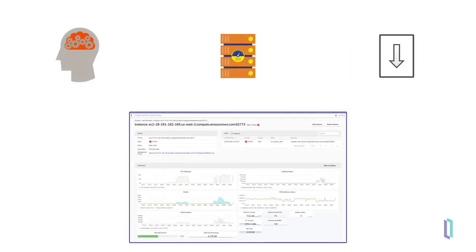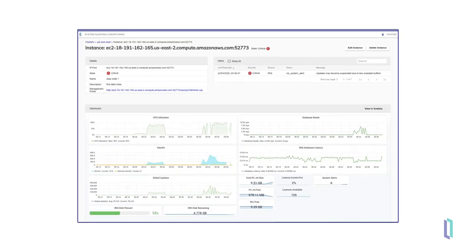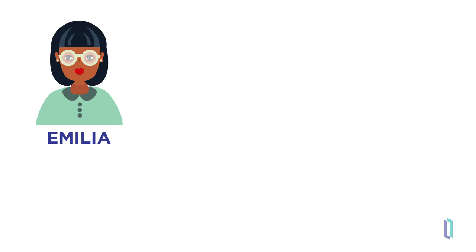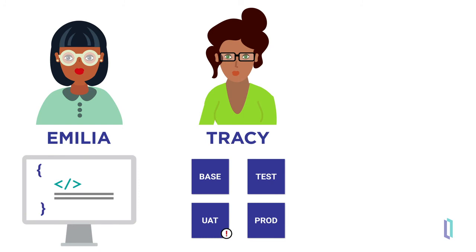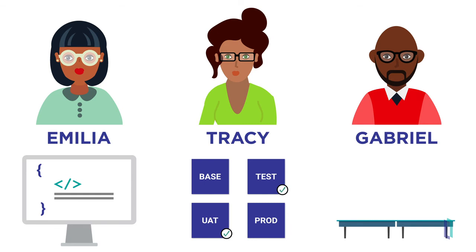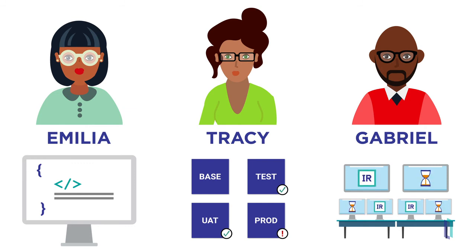With SAM, you can see what's impacting your system in one consolidated location, and you can configure your alerting to fit the needs of your business. Going back to the initial problems of our team members, we can start to see how SAM makes their jobs easier. Amelia can quickly identify if her last check-in is affecting CPU or another aspect of the system. Tracy can more easily identify the root cause of performance issues and find a remedy even faster. And while Gabriel can certainly reap some of the benefits from all these features, some of the backend features of SAM make his day-to-day tasks even easier.